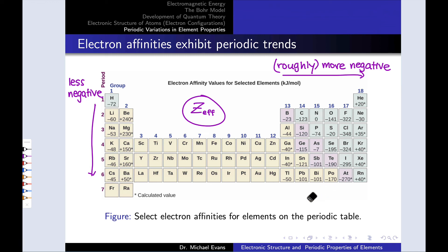Here are the trends laid out on the periodic table. Thinking in terms of exothermic meaning a negative value, we get more negative moving left to right, though there are exceptions. Group 15 is a particularly notable exception, and the noble gases are all over the place because they have completely full valence shells. Generally, we get a less negative value moving down each group. Like ionization energy, this is all driven by effective nuclear charge — the greater Z-effective is, the more exothermic the electron affinity, because high Z-effective attracts electrons strongly into the atom.